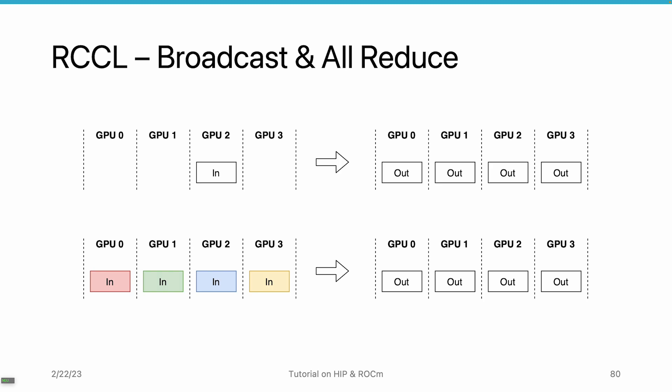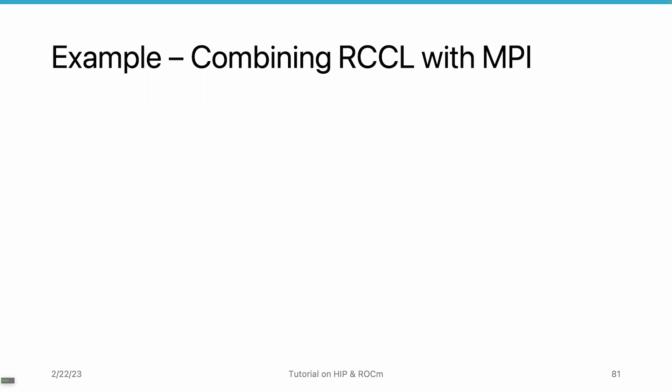Here we want to show one example. As seen in a previous example, we have used MPI to program a multi-GPU platform. But the problem with MPI is it can only support CPU-to-CPU communication — it doesn't support GPU-to-GPU communication. RCCL supports GPU-to-GPU communication, so we can combine RCCL with MPI to support both CPU and GPU communication.